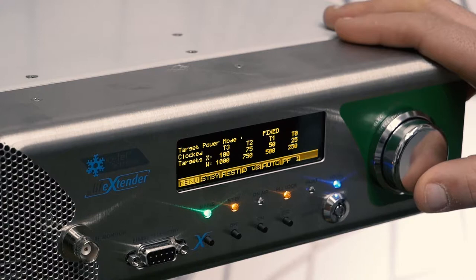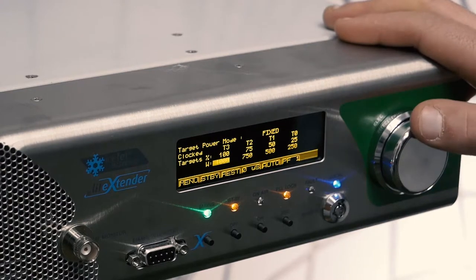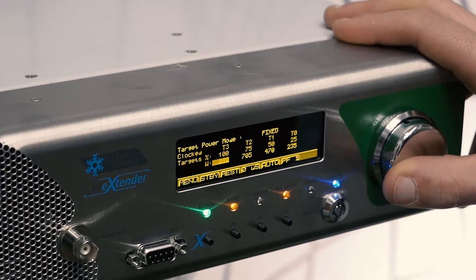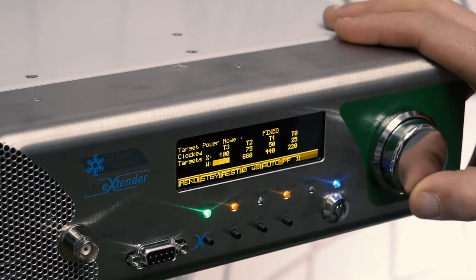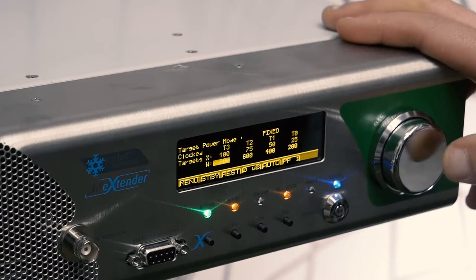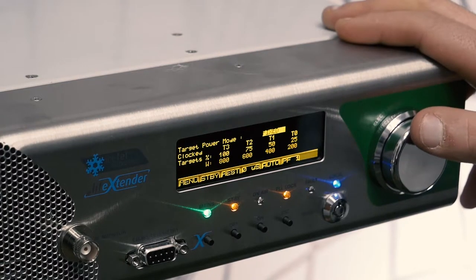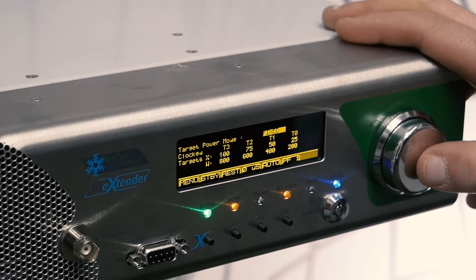Here you can set T3, T2, T1, and T0. When you set T3 as the target power, T2, T1, and T0 will automatically be 75%, 50%, and 25% of that target power.